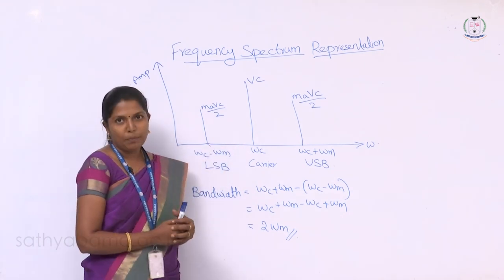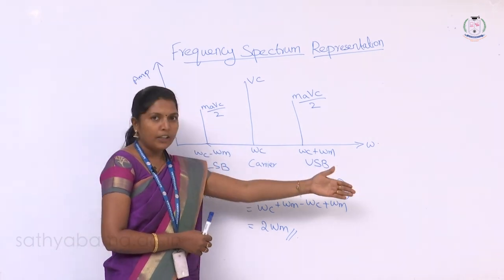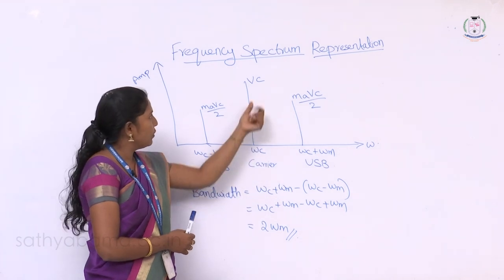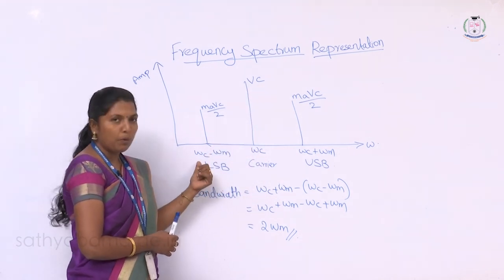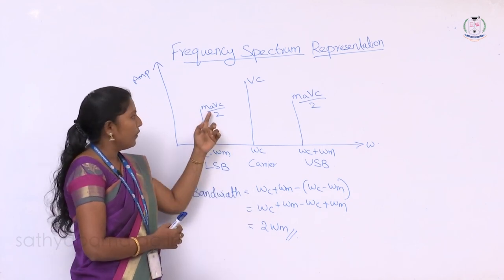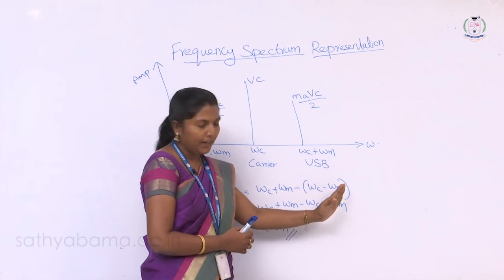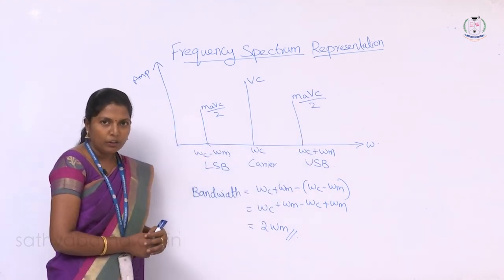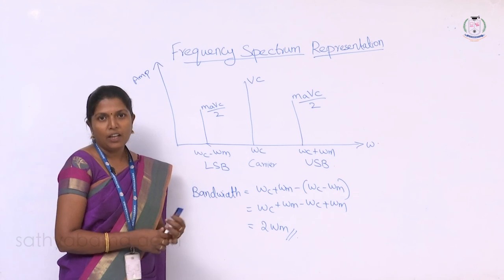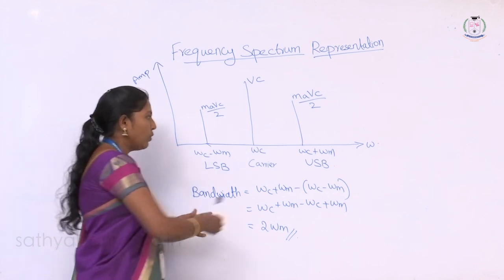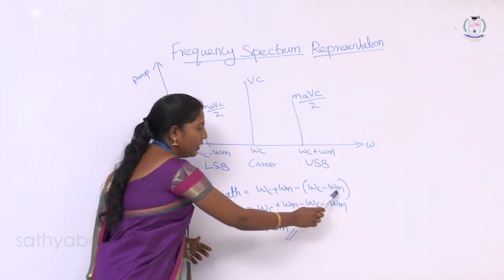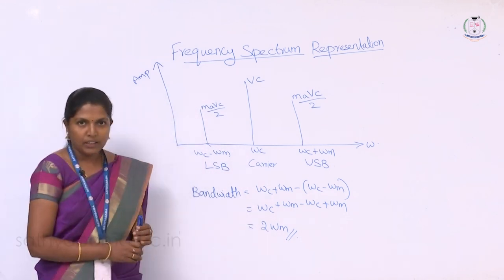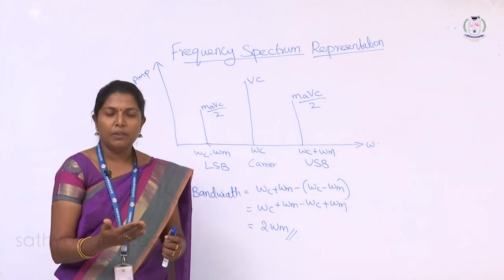Now we will see the frequency spectrum representation of the AM waveform. In the frequency domain, at carrier frequency ωc the amplitude is Vc; at the lower sideband frequency (ωc − ωm) the amplitude is Ma·Vc/2; and at the upper sideband frequency (ωc + ωm) the amplitude is Ma·Vc/2. The bandwidth is the upper cutoff frequency minus the lower cutoff frequency: (ωc + ωm) − (ωc − ωm) = 2ωm. Therefore, the bandwidth equals twice the frequency of the message signal.